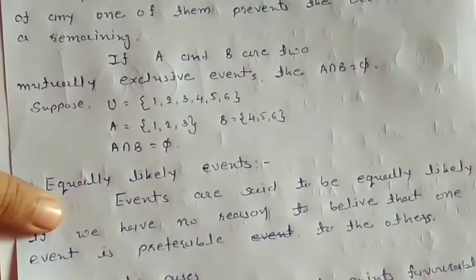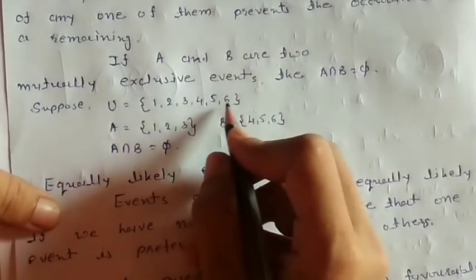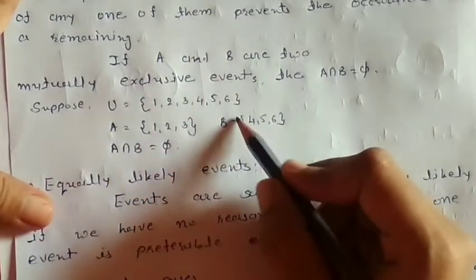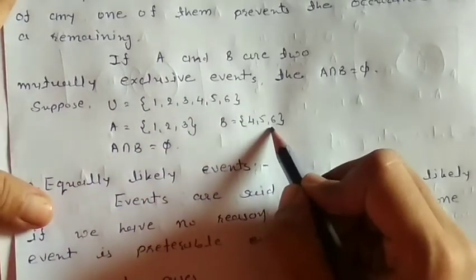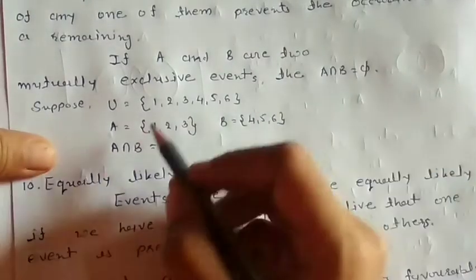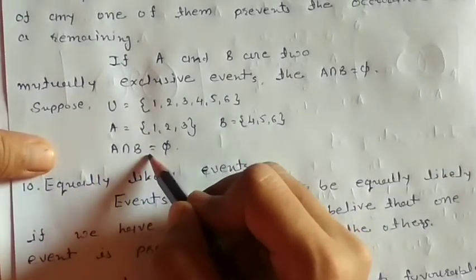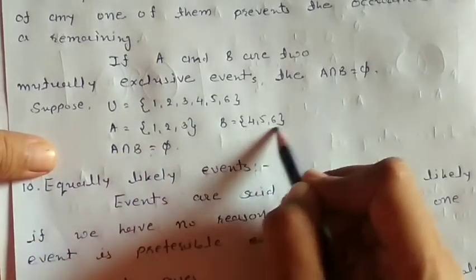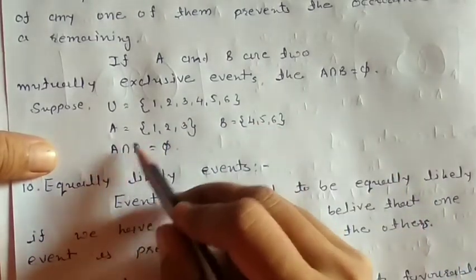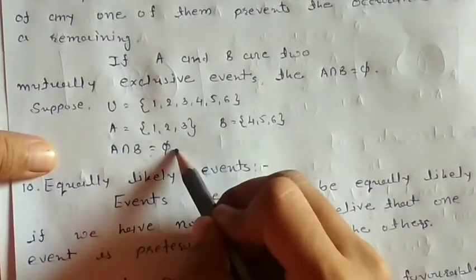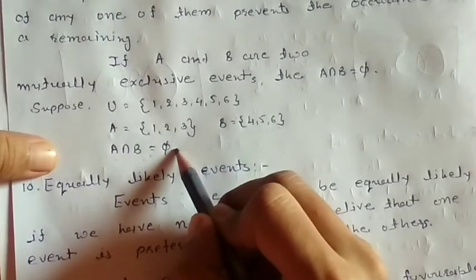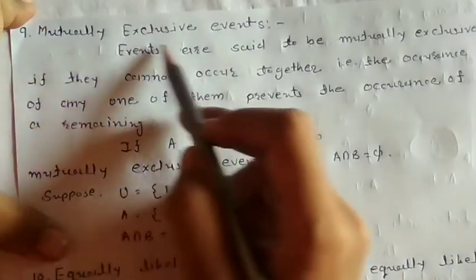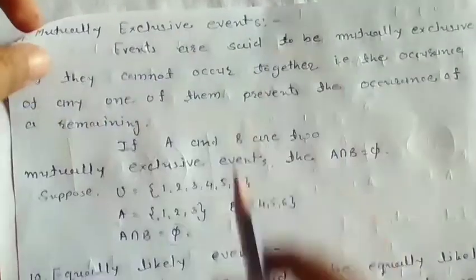If A and B are two mutually exclusive events, then A intersection B is equal to null. For example, suppose U = {1,2,3,4,5,6}, A = {1,2,3}, and B = {4,5,6}. Then A intersection B — meaning what is common in both — equals null. So this is our mutually exclusive event.